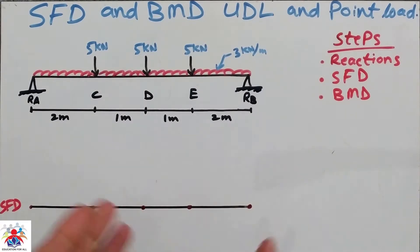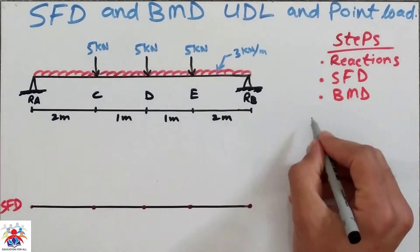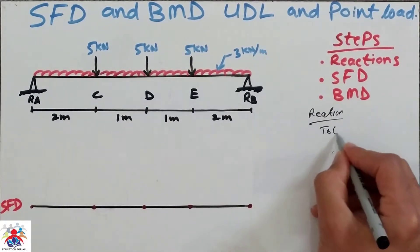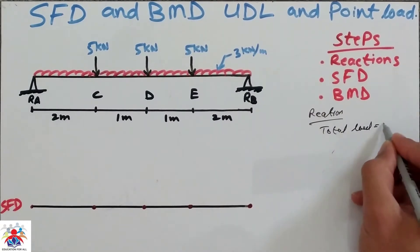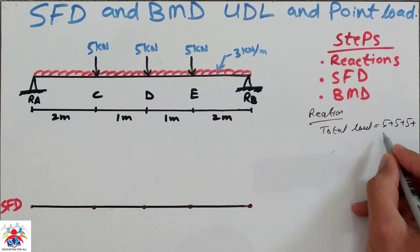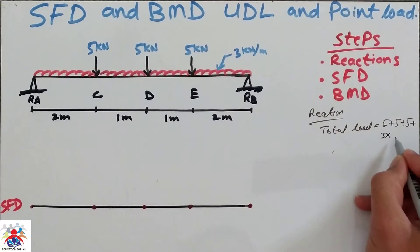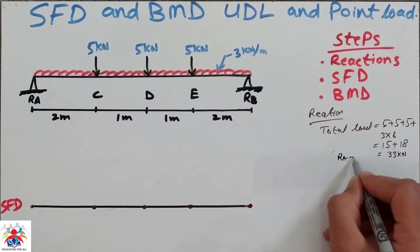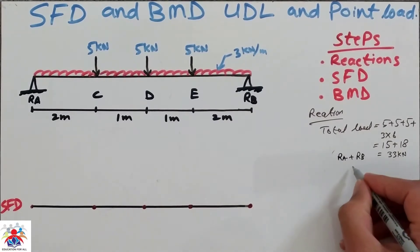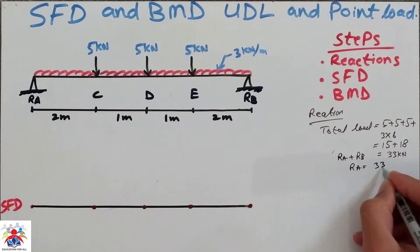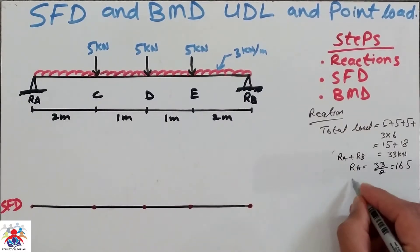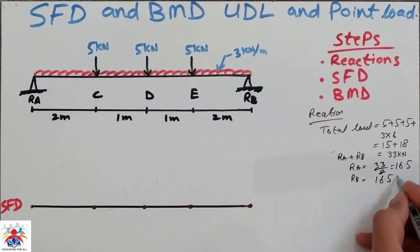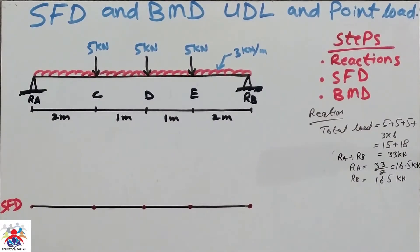First of all we will calculate reactions. As you can see, our beam is symmetrical so calculating reactions is quite easy. Reactions equal total load: 5 plus 5 plus 5 plus 5, plus 3 multiplied by 6, so 15 plus 18 equals 33 kilonewton. So RA plus RB equals 33 kilonewton, and since the beam is symmetrical, RA equals RB equals 16.5 kilonewton.